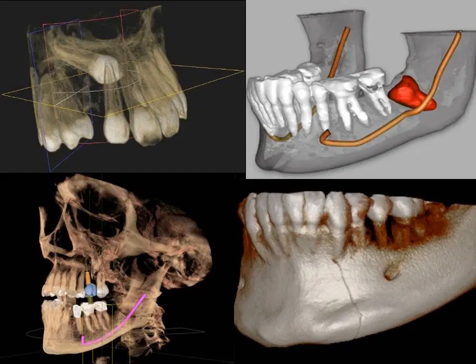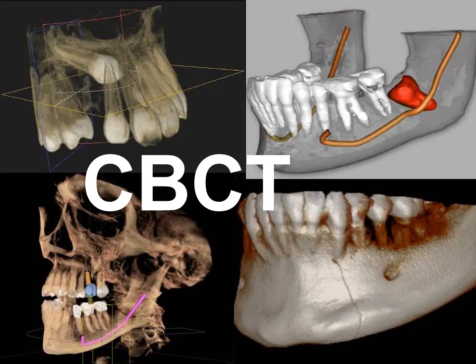However, projection errors, landmark identification errors, their superimposition, and the two-dimensional image of a three-dimensional structure are the common disadvantages of these radiographs. To overcome these drawbacks, nowadays there is a shift to three-dimensional imaging, which can be provided by cone beam computed tomography or CBCT. As seen here, the maxillary canine is impacted, and by using CBCT there will be accurate localization of the impacted tooth, leading to more perfect treatment. Therefore, CBCT can be considered a valuable tool in orthodontic diagnosis and treatment planning.